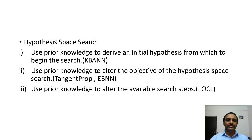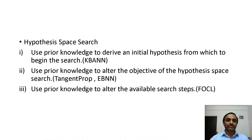How to combine these two learning techniques remains an open question in machine learning. Here we explore three different methods for using prior knowledge to alter the search performed by purely inductive methods. First: use prior knowledge to derive an initial hypothesis from which to begin the search. Second: use prior knowledge to alter the objective of the hypothesis space — examples include Tangent Prop and EBNN. Third: use prior knowledge to alter the available search steps.